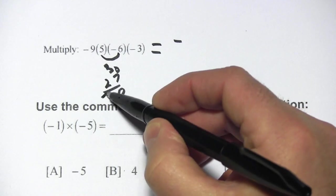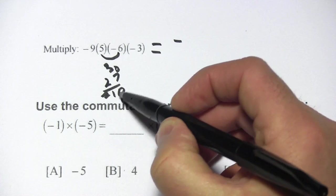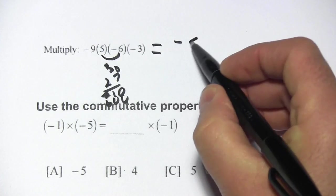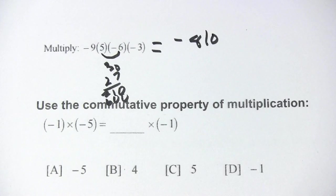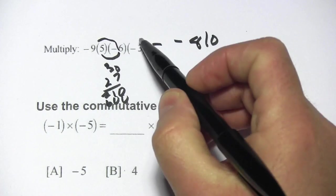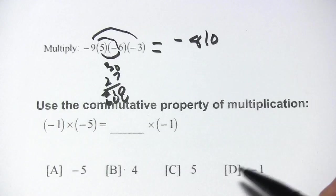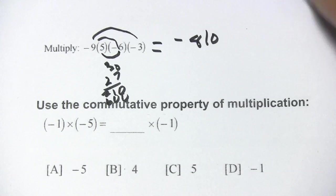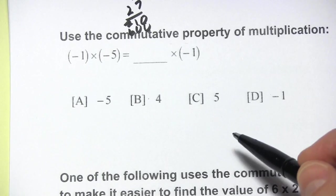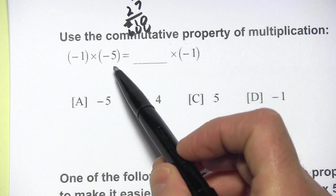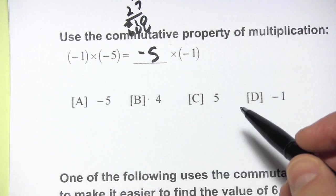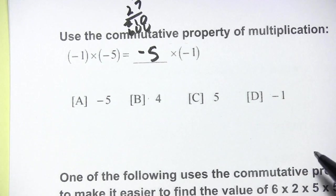Seven times zero is zero, seven times three is twenty-one, two times zero I've got to put another zero, and two times three is six. So we get eight hundred and ten. You'll notice I decided to multiply certain numbers first and then multiply them by the others. That's an example of the commutative property, which says it doesn't matter what order you multiply things in. Negative one times negative five is the same as negative five times negative one — the order doesn't matter.